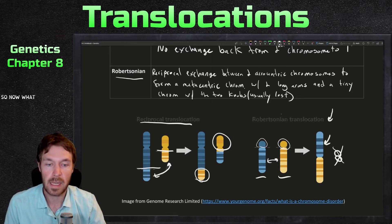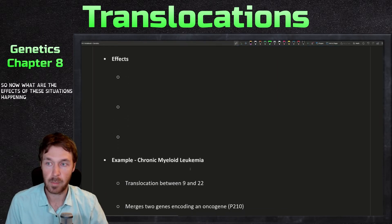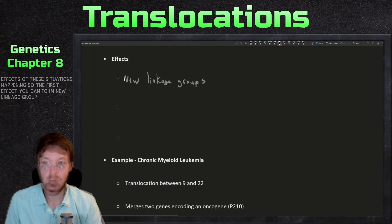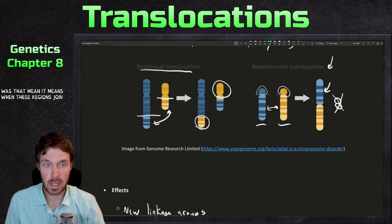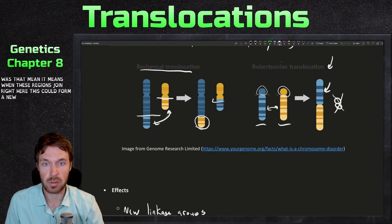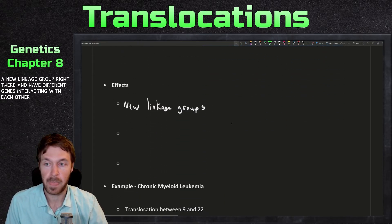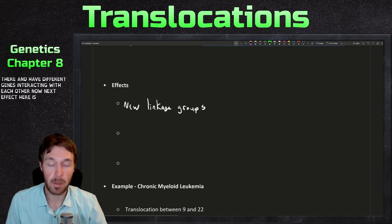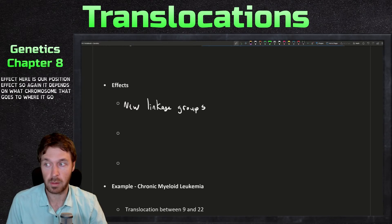So now what are the effects of these situations happening? The first effect, you can form new linkage groups. So what does that mean? It means when these regions join right here, this could form a new linkage group right there and have different genes interacting with each other now. Next effect here is our positional effect. So again, it depends on what chromosome it goes to, where it goes on the chromosome. So expression may be locus dependent.